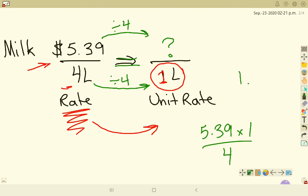Now this answer comes out as 1.347 blah blah blah blah. There's more stuff after that. Whenever we're talking about money, please round to the nearest penny. So that would be a dollar, and 34.7 cents would round up to 35 cents. So that rate we had on the first page, $5.39 for 4 liters of milk, our unit rate would then be $1.35 per 1 liter of milk.